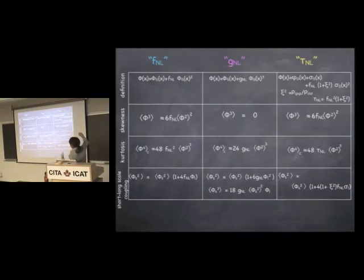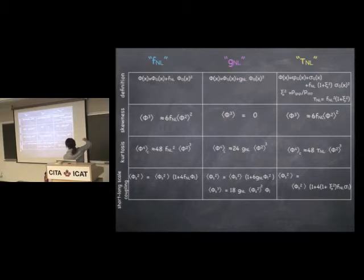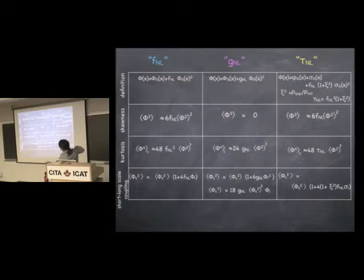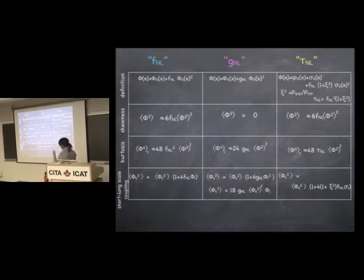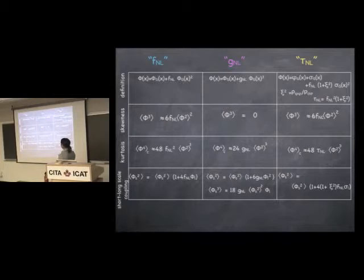This table summarizes the three cases: f_NL, g_NL, and tau_NL. f_NL and tau_NL have identical skewness; g_NL has no skewness. They all have kurtosis, but with different amplitudes depending on these parameters. The coupling between short and long wavelength scales differs: f_NL has a variance that varies with the long wavelength potential; g_NL has a skewness that varies with the long wavelength potential; and tau_NL has a variance that varies with just the sigma field part of the long wavelength potential. They're all local maps in real space applied to a Gaussian field, which makes them easy to implement.